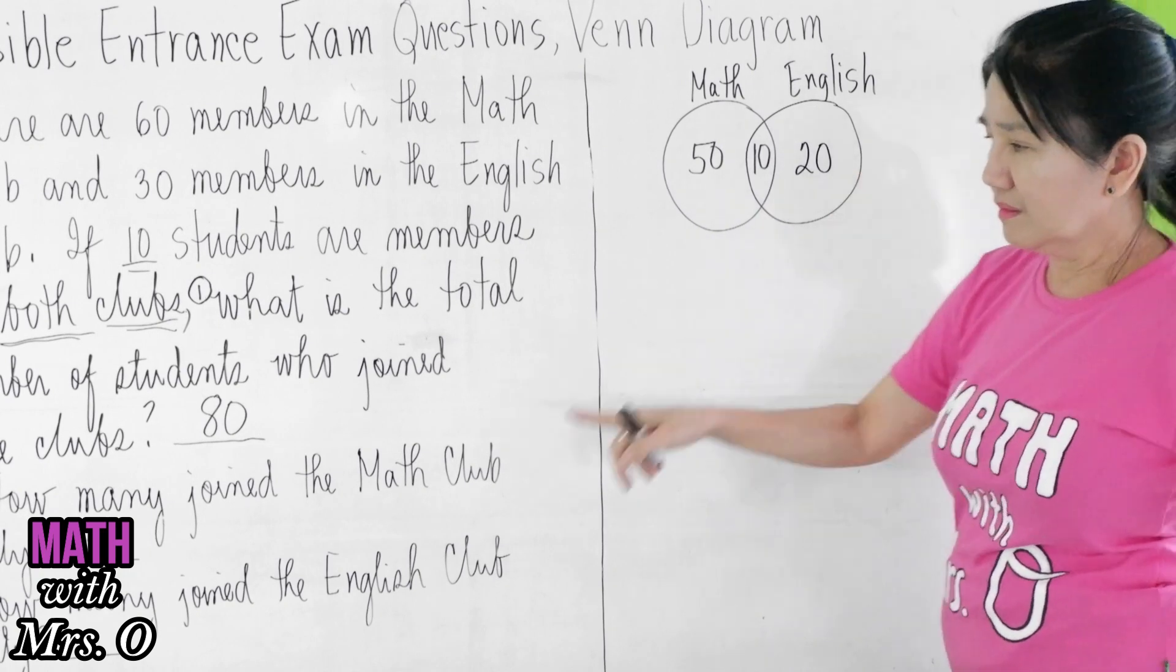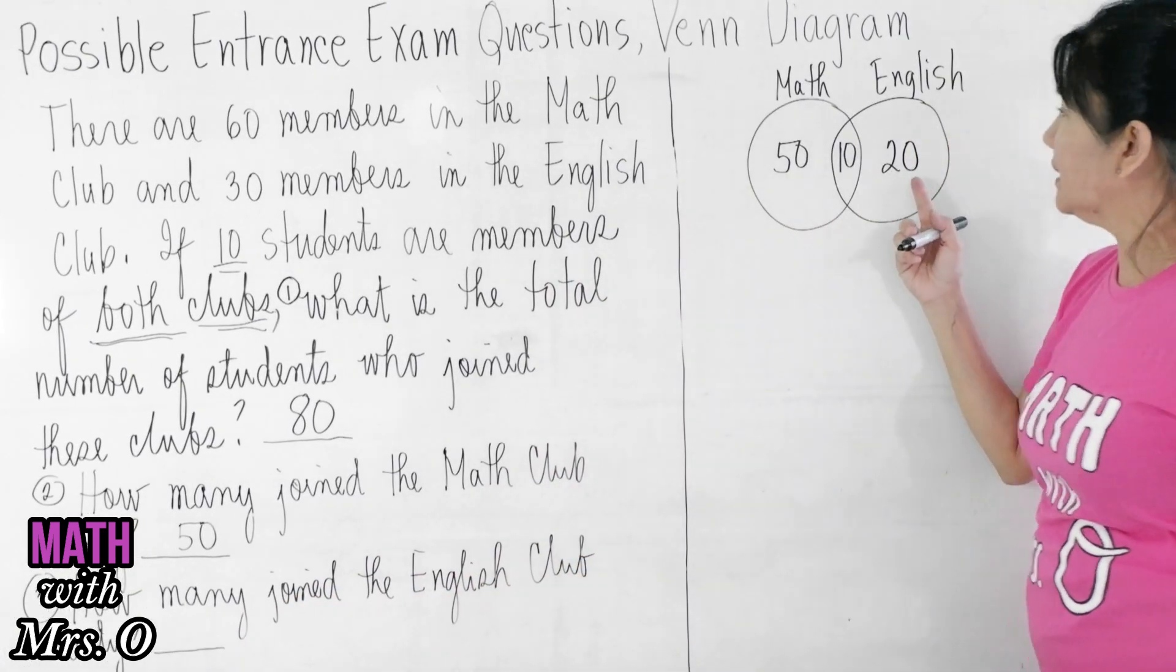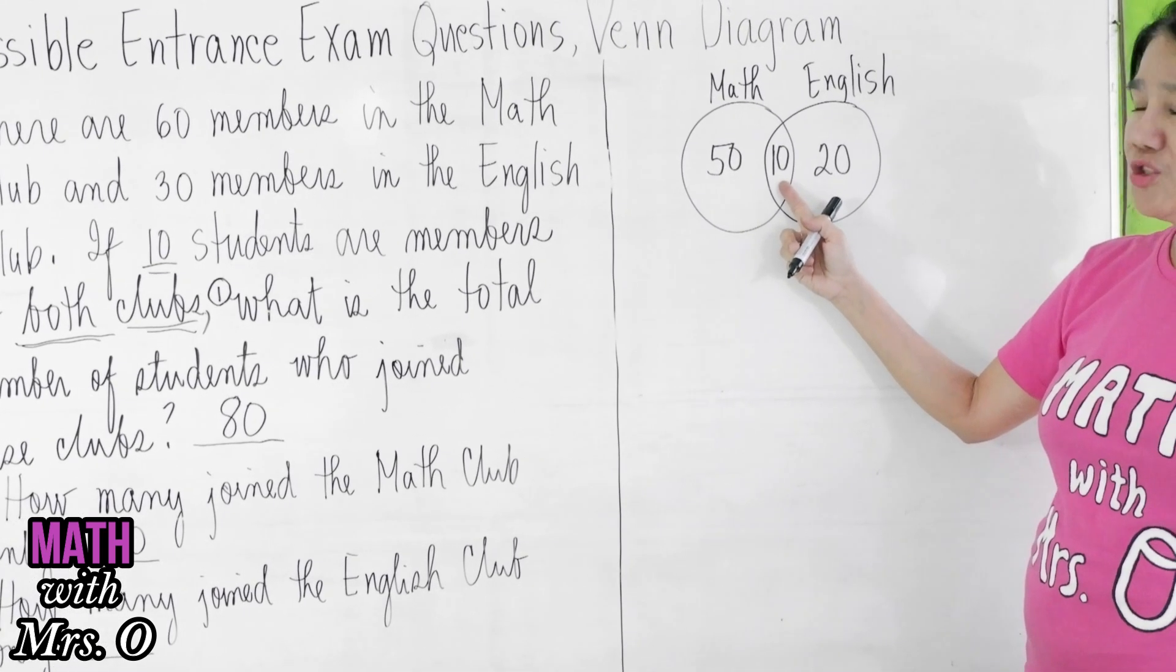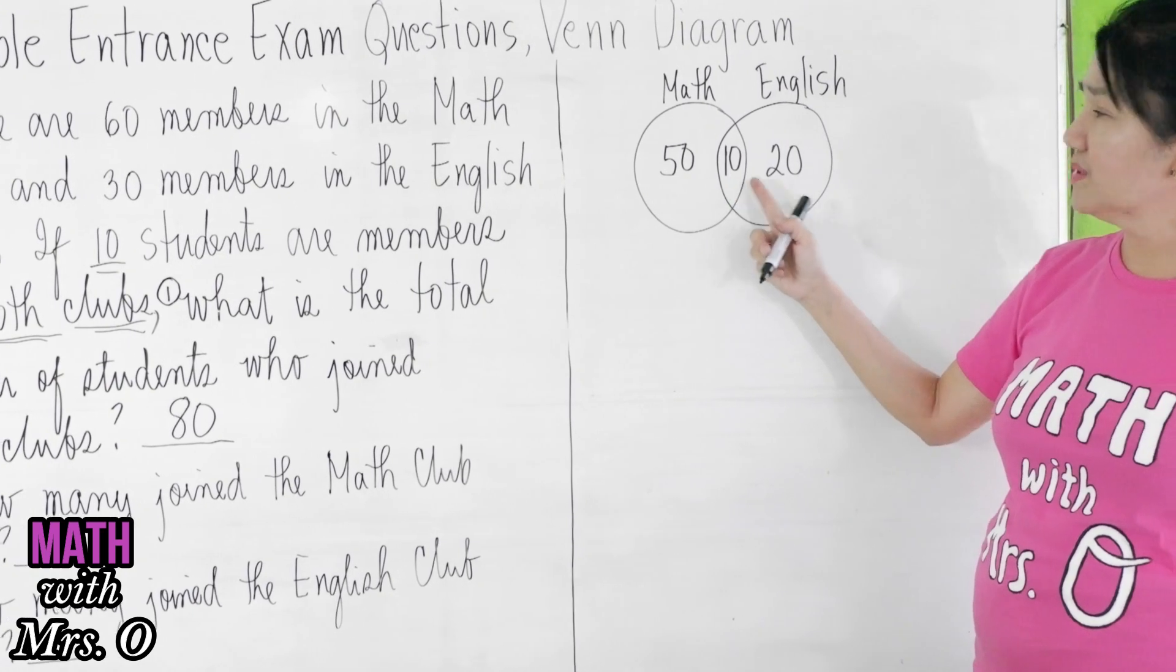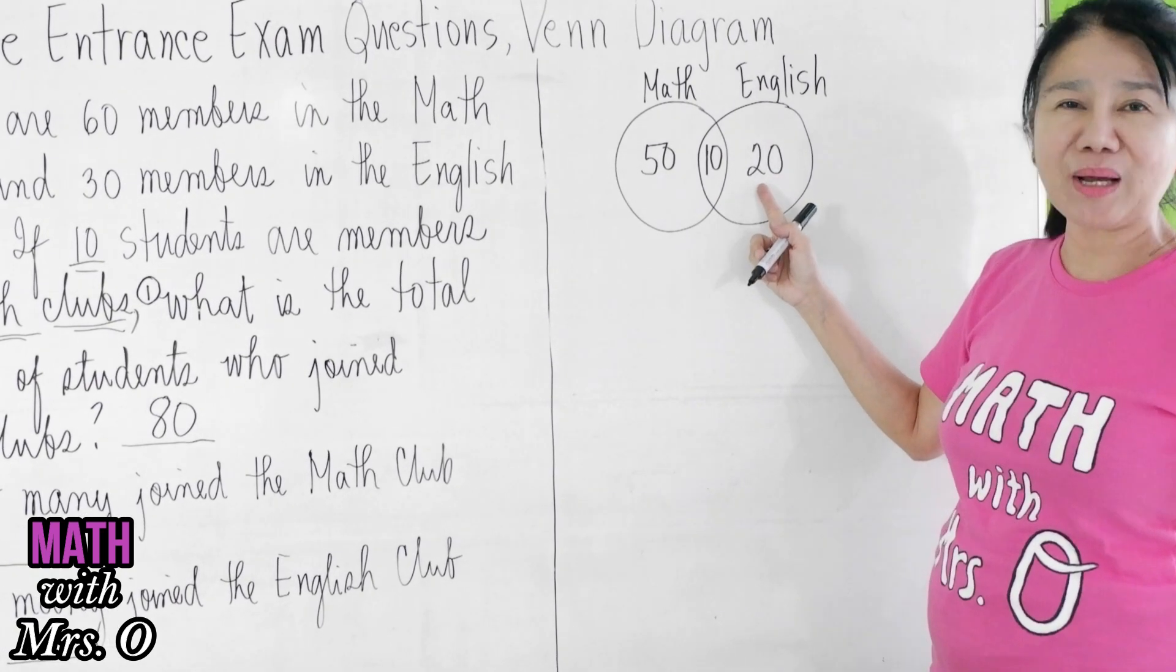And third question: how many join the English club only? Remember again, 10 join both clubs, so 20 join the English club only.